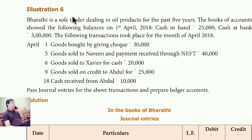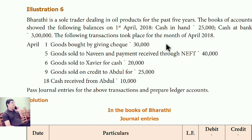Illustration 6. Barthi is a sole trader dealing in oil products for the past 5 years. The books of account showed the following balances on 1st April 2018: cash in hand 25,000 and cash at bank 3 lakhs. The following transactions took place for the month of April 2018. Pass the journal entries and prepare the ledger.